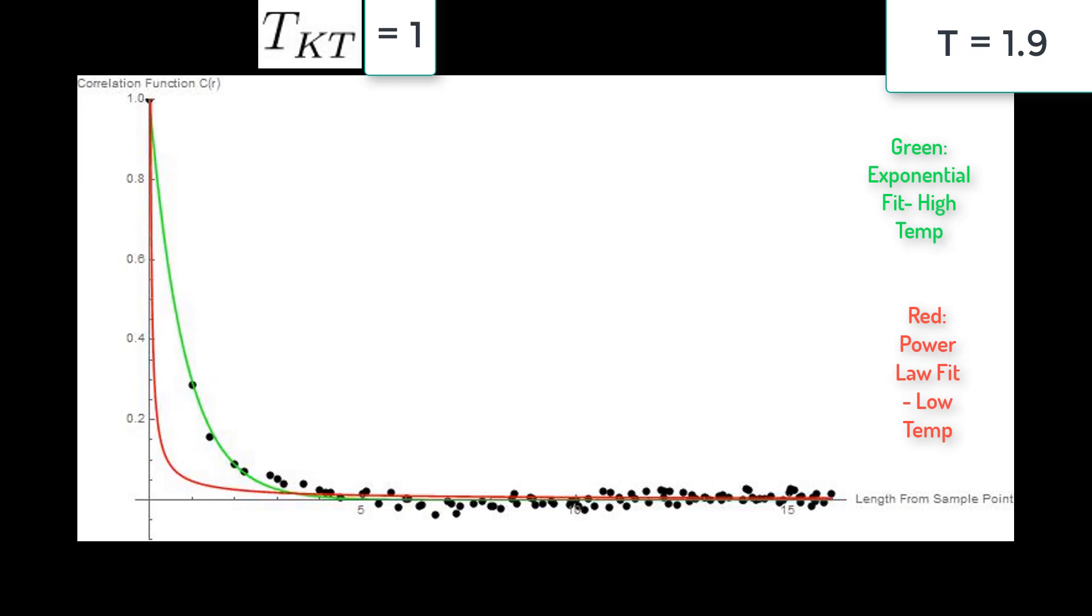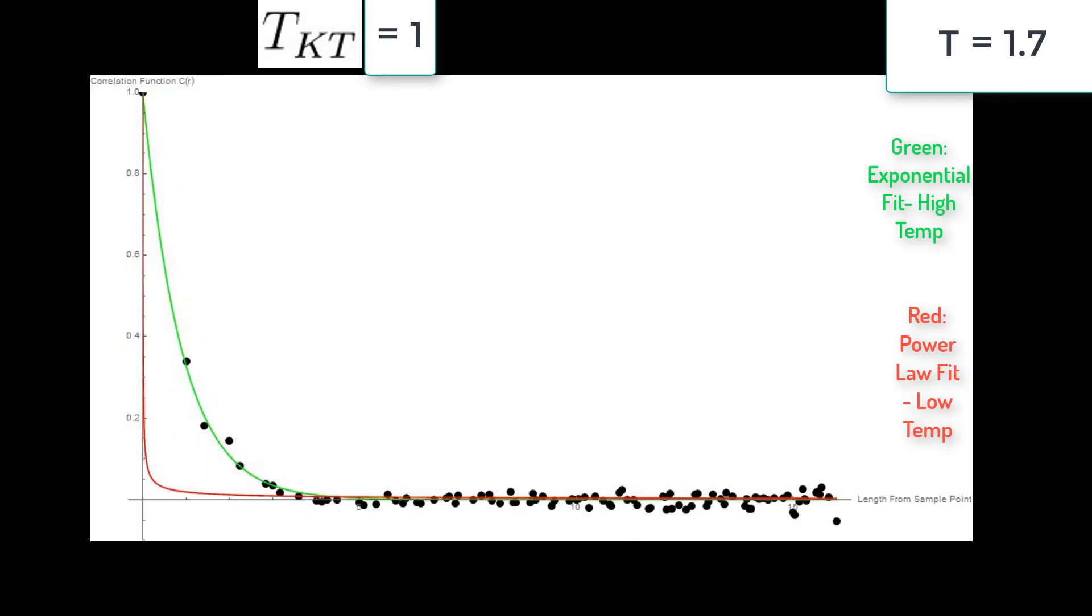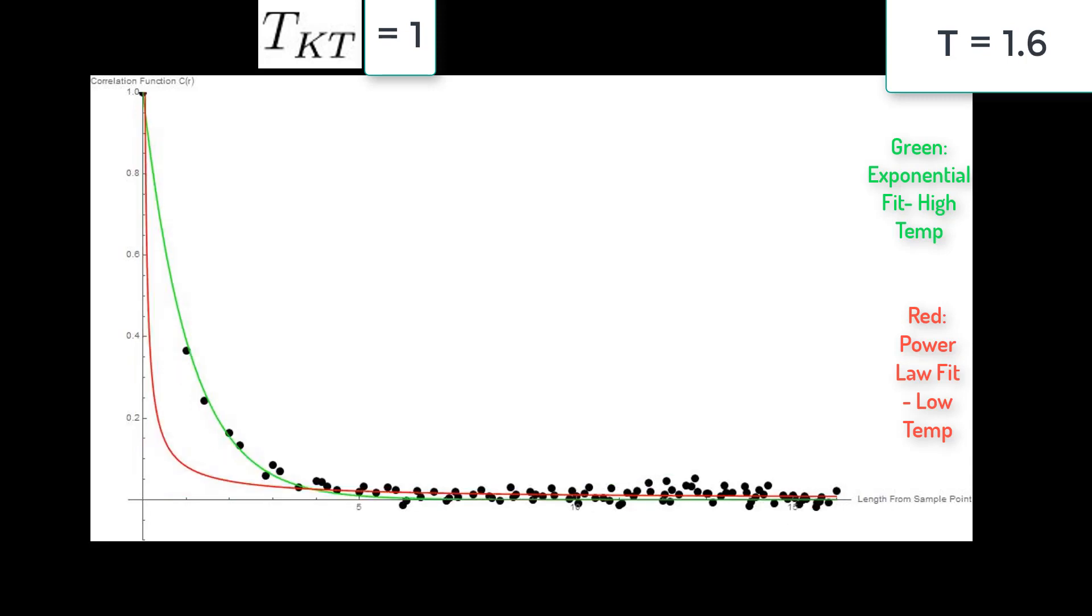Displayed now are plots with the correlation function for given temperatures. Stepping through plots with different temperatures, we can see the transition from exponential to power law.